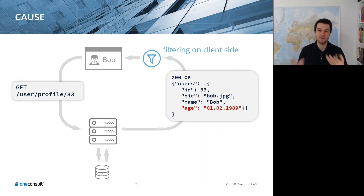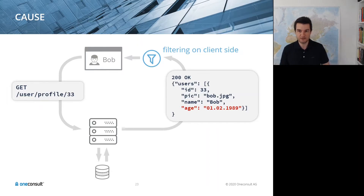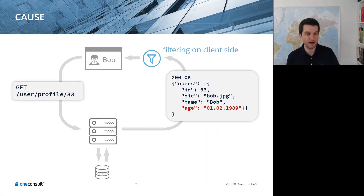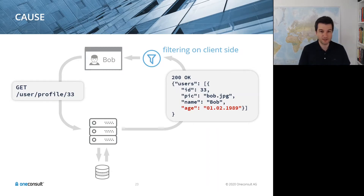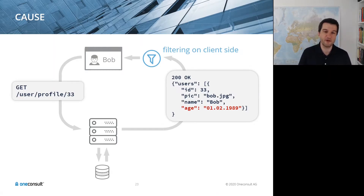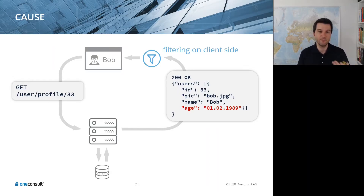If filtering is done client-side — for example, a user profile that only displays the user's age but actually transmits the full birth date — an attacker looking at the traffic now knows potentially sensitive data. Of course, you can imagine data even more sensitive than a birth date being transmitted this way.